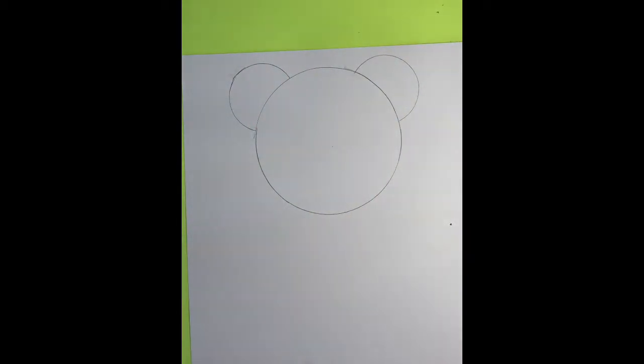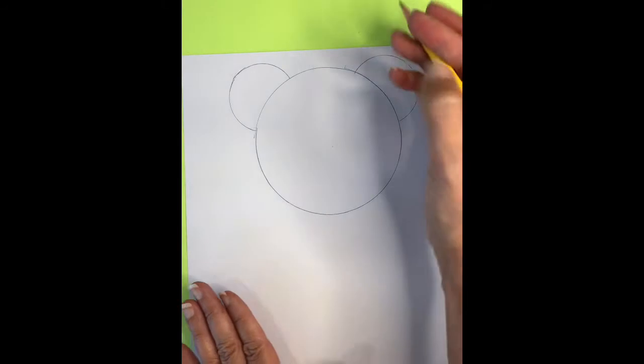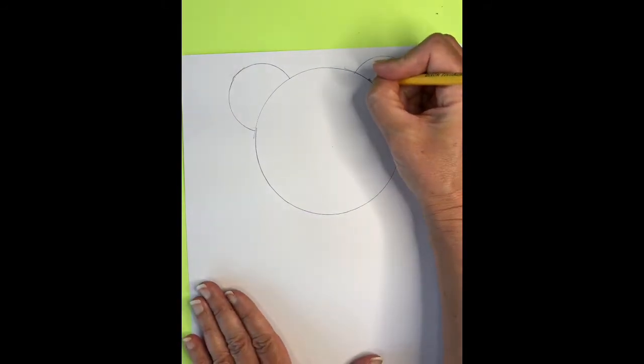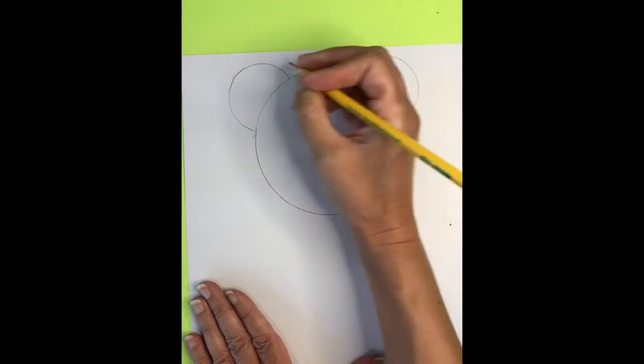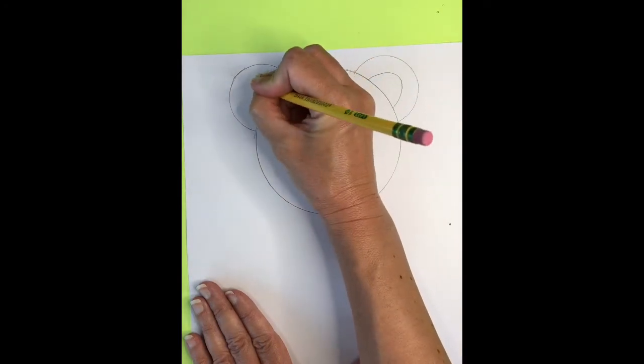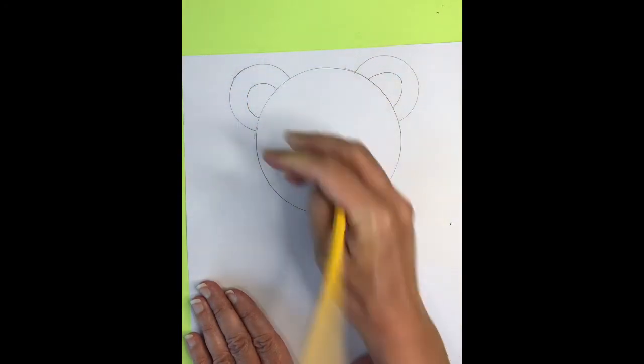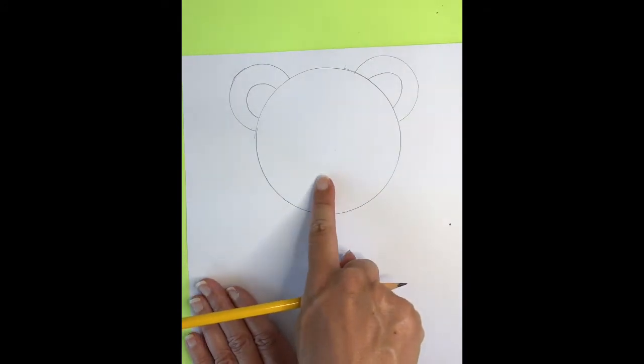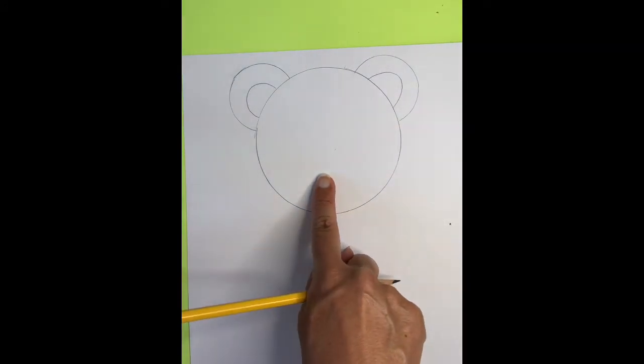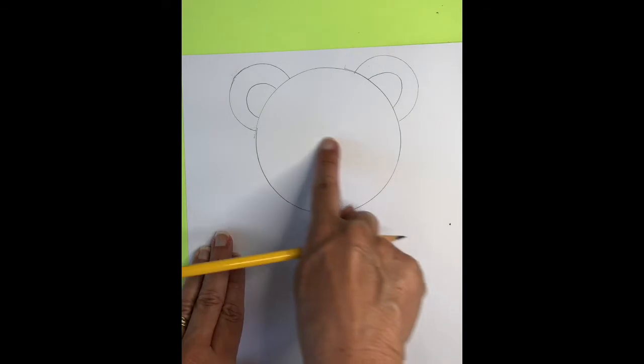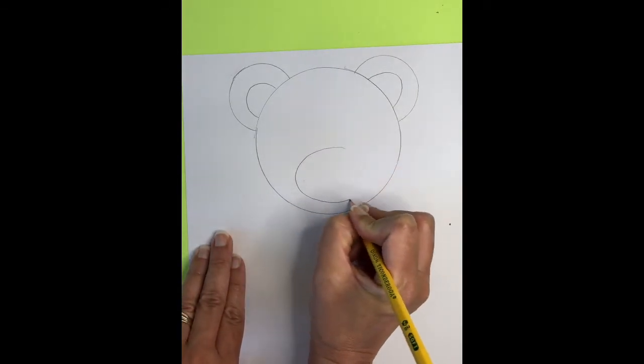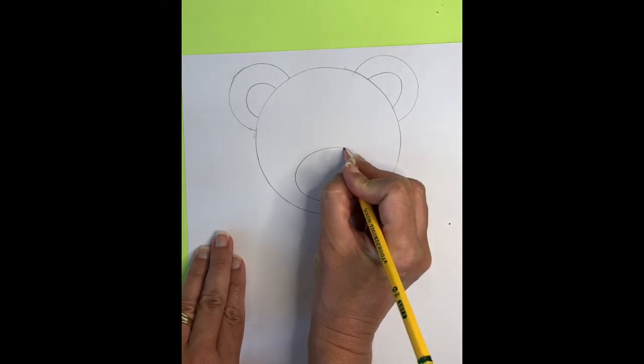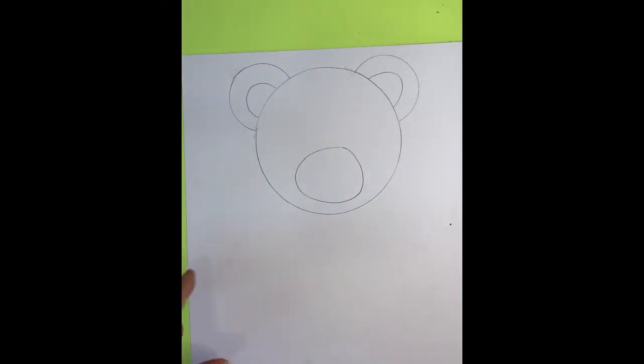Now inside these shapes, we're going to be drawing some smaller shapes. We're going to draw a shape that looks like a half a circle. This is going to be the inside of the ears. And then at the bottom of the face, we're going to be drawing in a little oval here for the nose.